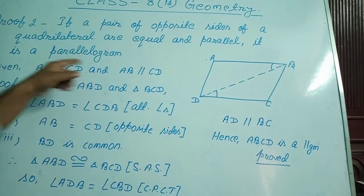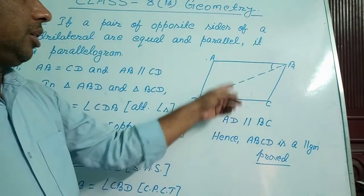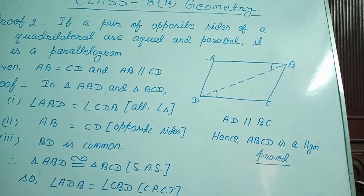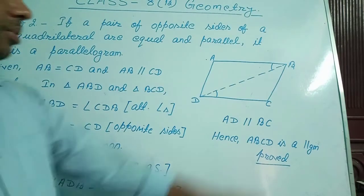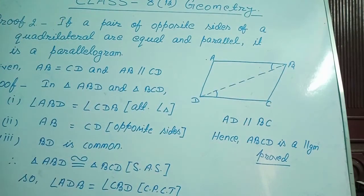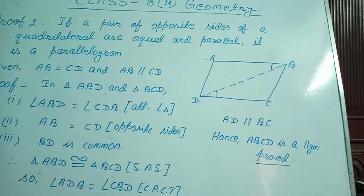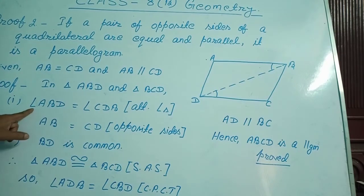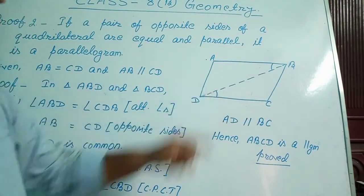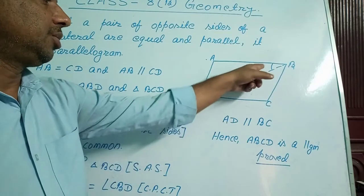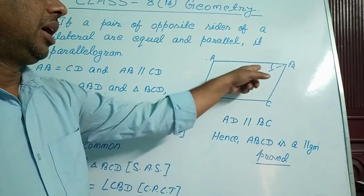We are asked to prove that ABCD is a parallelogram. If AB and CD are equal and parallel, secondly if we prove BC is also parallel to AD then ABCD will be a parallelogram. So our aim is to prove BC is parallel to AD. For that I look at triangles ABD and BCD to prove that these two triangles are congruent. The first condition is angle ABD equal to angle CDB, because if AB and CD are parallel then these two angles will be equal, being alternate angles.